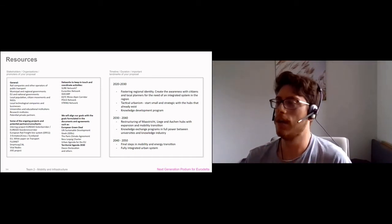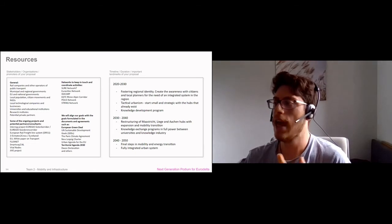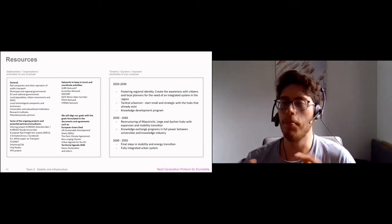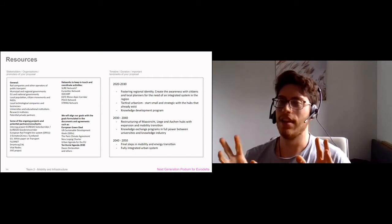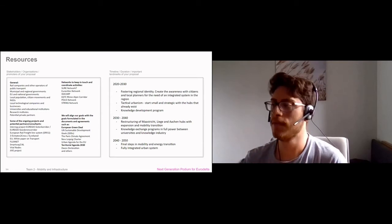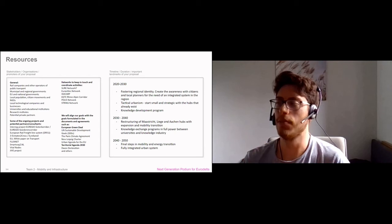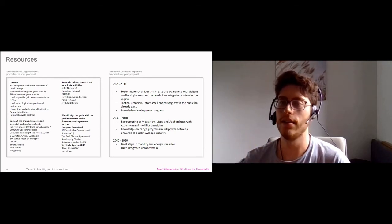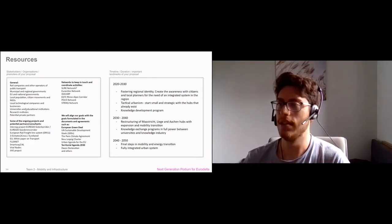From 2030 to 2040, we are restructuring the three main hubs, Maastricht, Liège and Arnhem with expansion and addition of new modes. The knowledge exchange programs are in full power between universities and knowledge industry. In 2034 we really see that the flows and activities start to give economic results. From 2040 to 2050, we have the final steps in this mobility and energy transition, reaching net zero carbon with a fully integrated functional urban system.